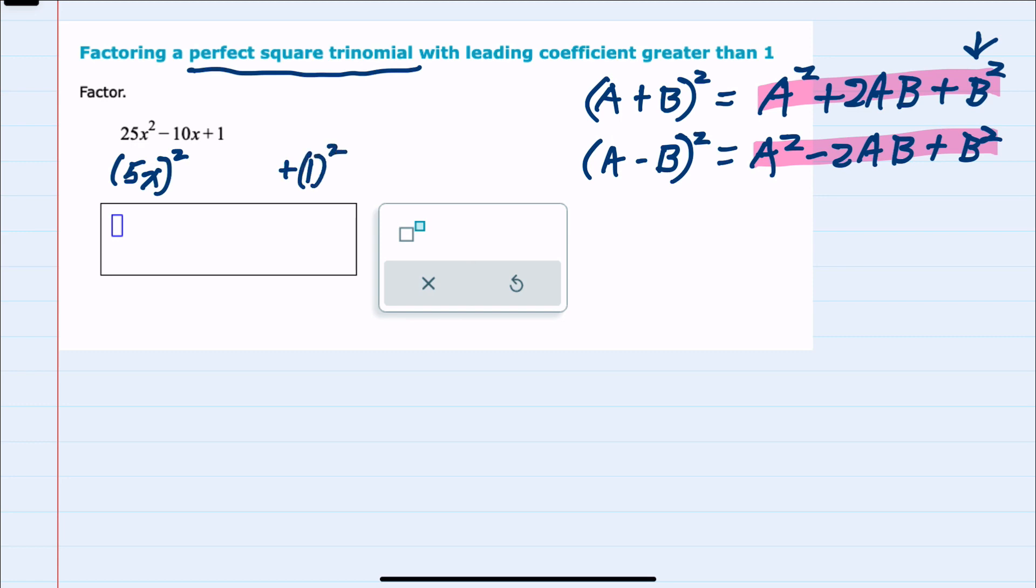And then in the middle, this is -2 times a, which our a is that 5x, times 1. So if you recognize a quadratic like this as being a perfect square here and here,